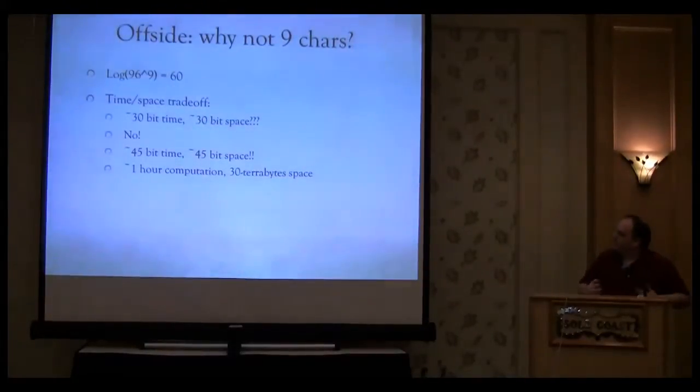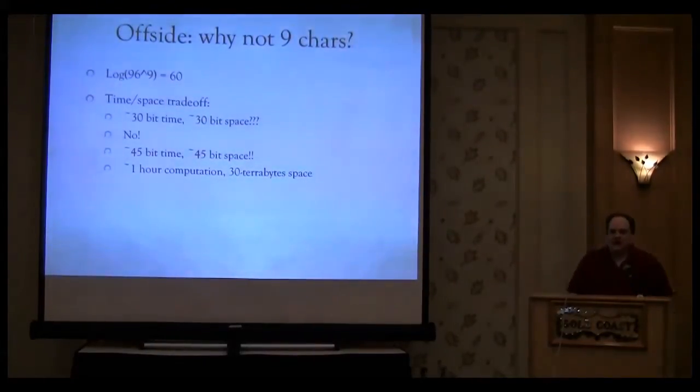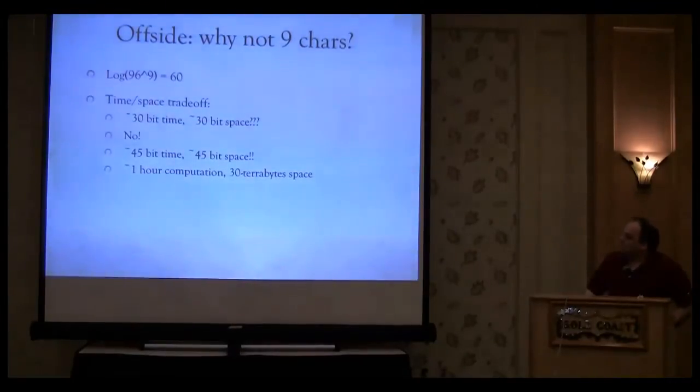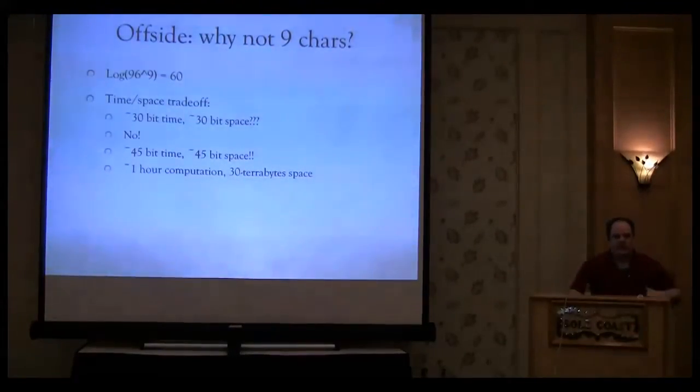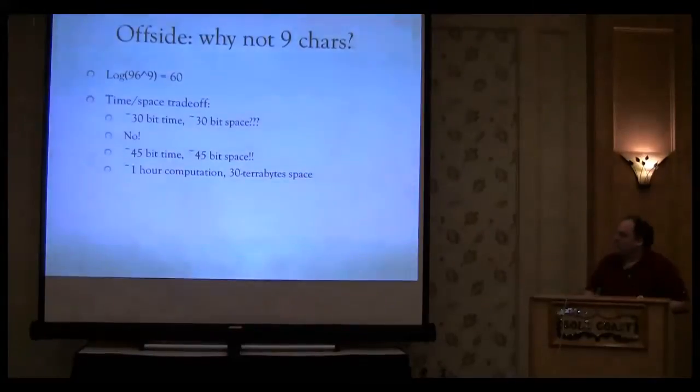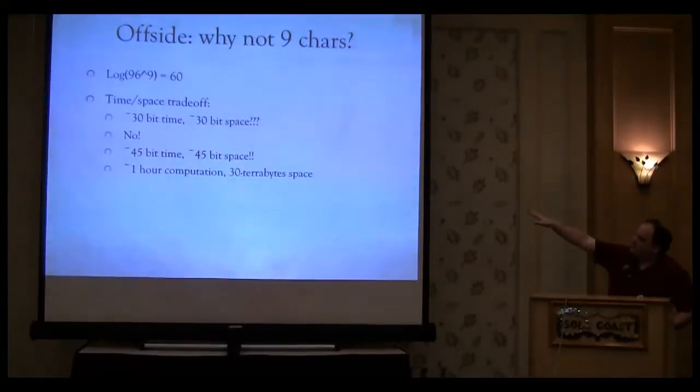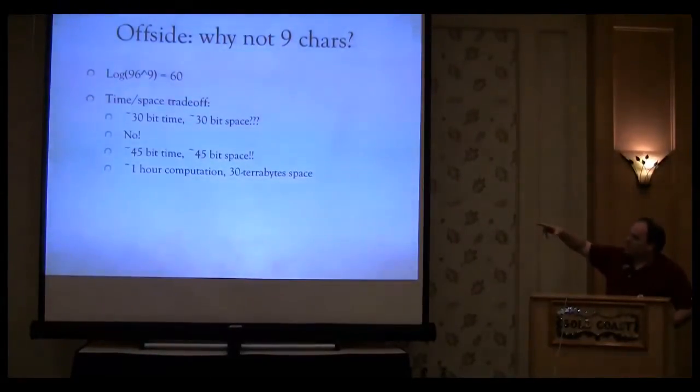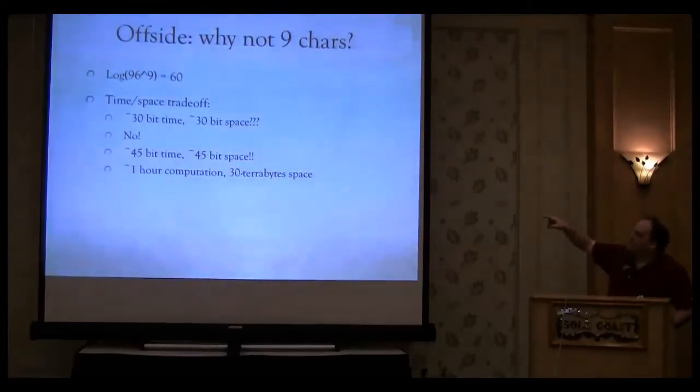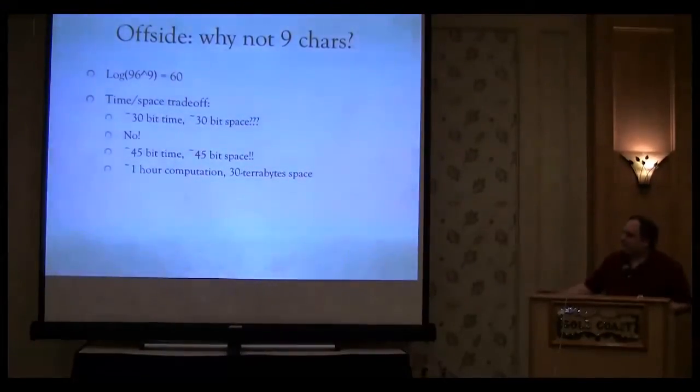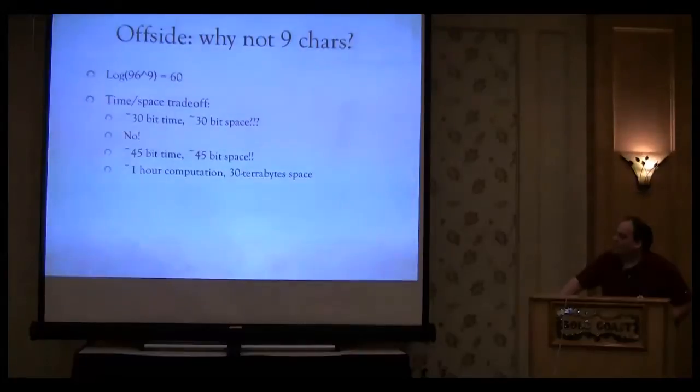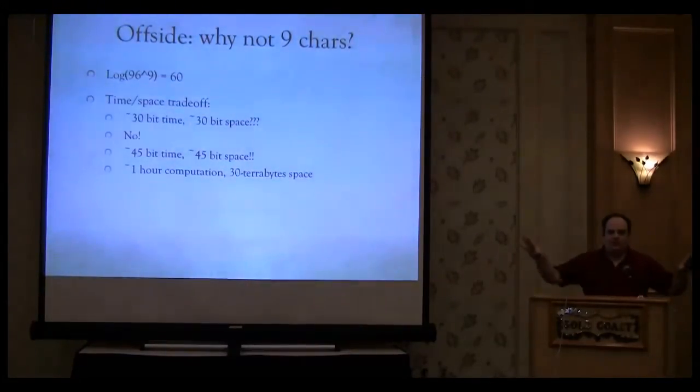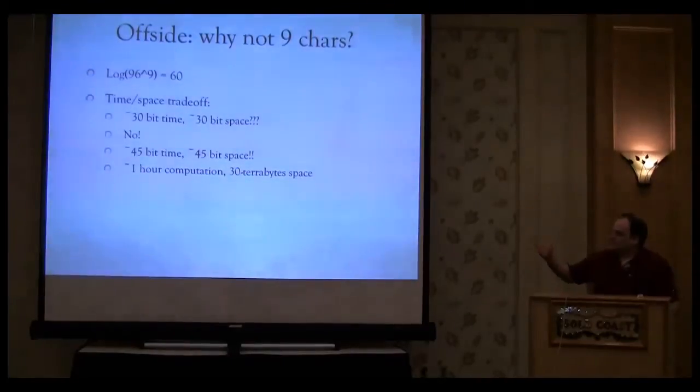So by the way, I wanted to mention it. Why is there no nine-character passwords? So as we know, rainbow tables is a time-space trade-off. And what's a trade-off? Well, so 96-character password, 96 possible characters to ninth power is log base two is 60. So 60-bit complexity problem. And the time-space trade-off for rainbow tables isn't 30 bits, 30 bits. It comes out to roughly 45 bits, 45 bits. Which means 45 bits worth of time, which is one hour of computation using hashcat or something like that, or GPU.